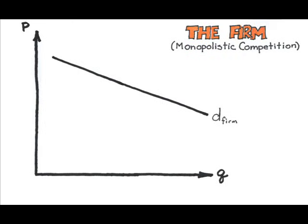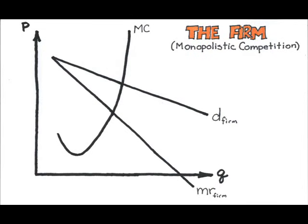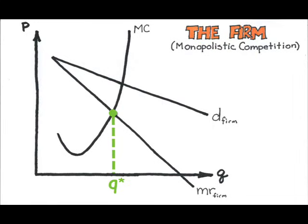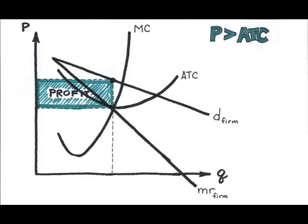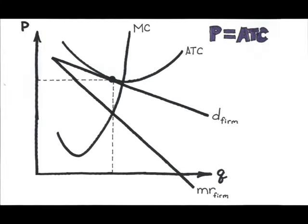From here, you can treat the graph much as you treated the monopoly graph. With a downward sloping demand, the firm's marginal revenue will lie below its demand curve. To find the profit-maximizing output and price for the firm, we need to add the marginal cost curve, determine where marginal revenue equals marginal cost to get the optimal output Q-star, and then use the demand line to determine how much the firm can get buyers to pay for those Q-star units. Like a monopolist, a monopolistically competitive firm could make money, lose money, or break even in the short run. But like perfect competition, the picture will change in the long run — the firm will end up just breaking even over time.